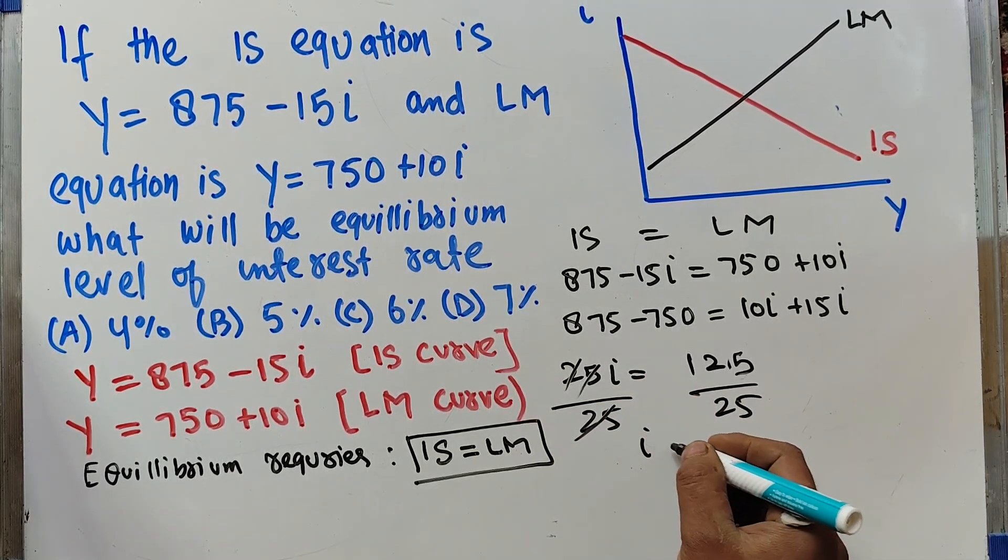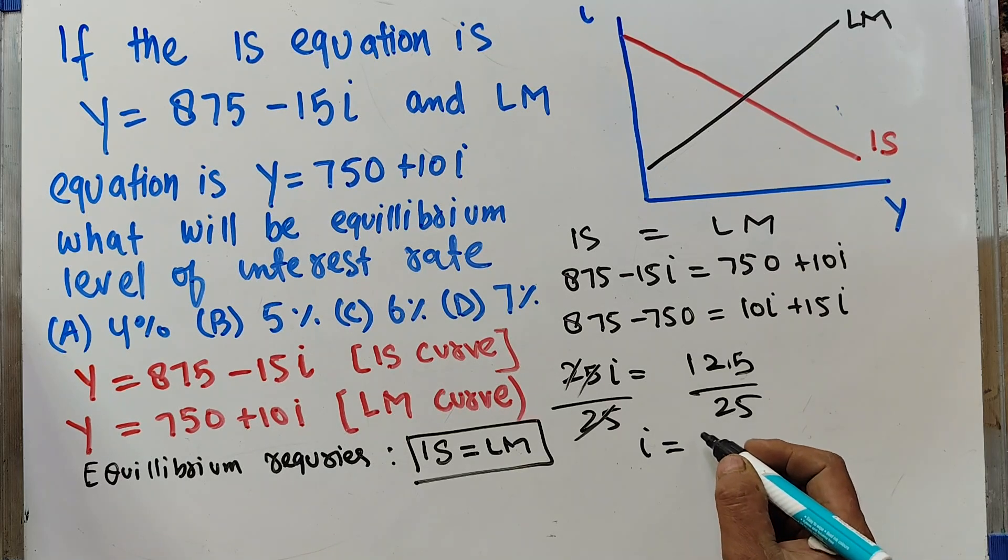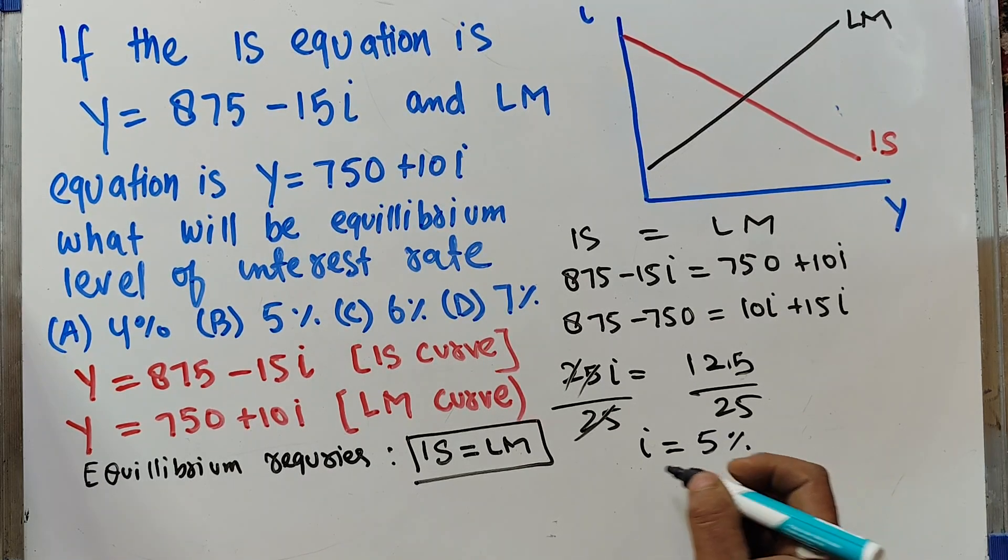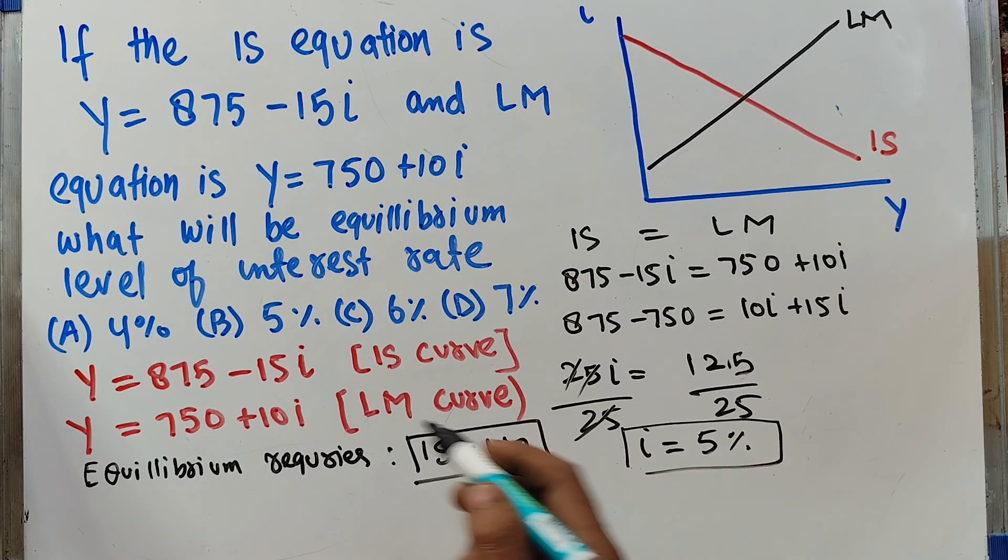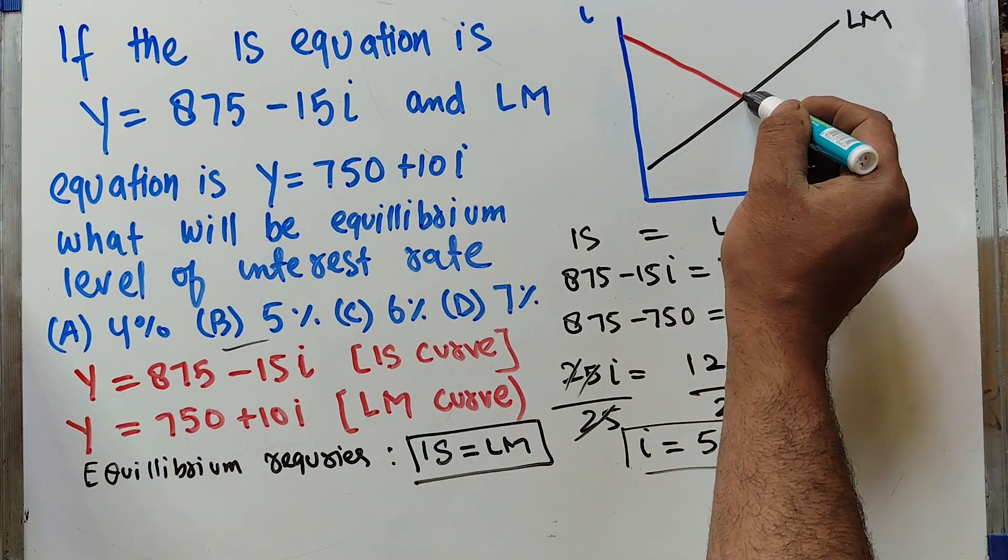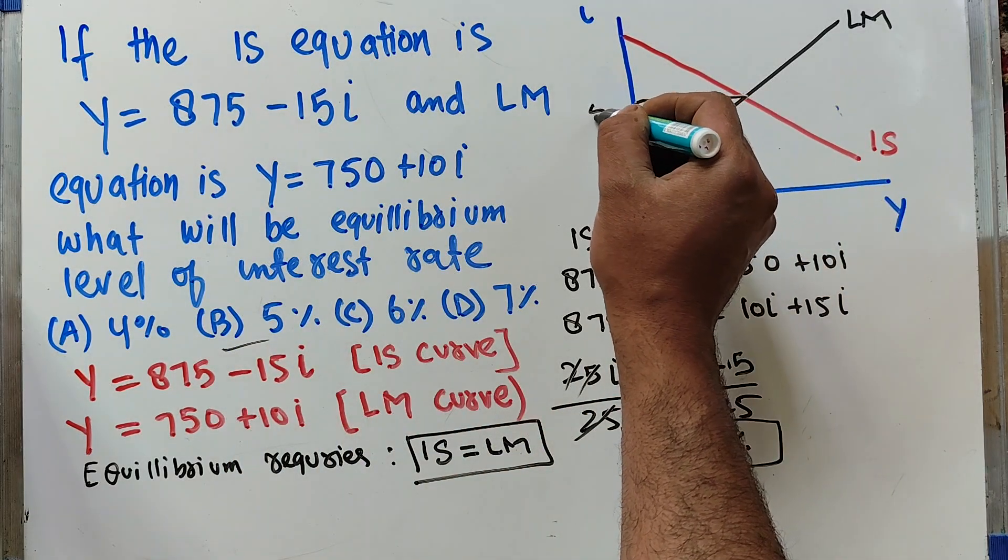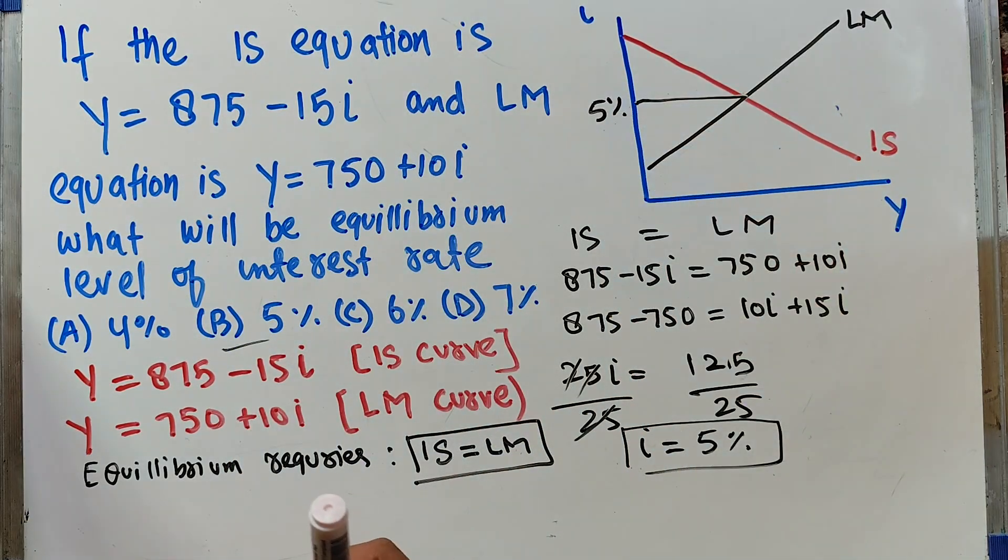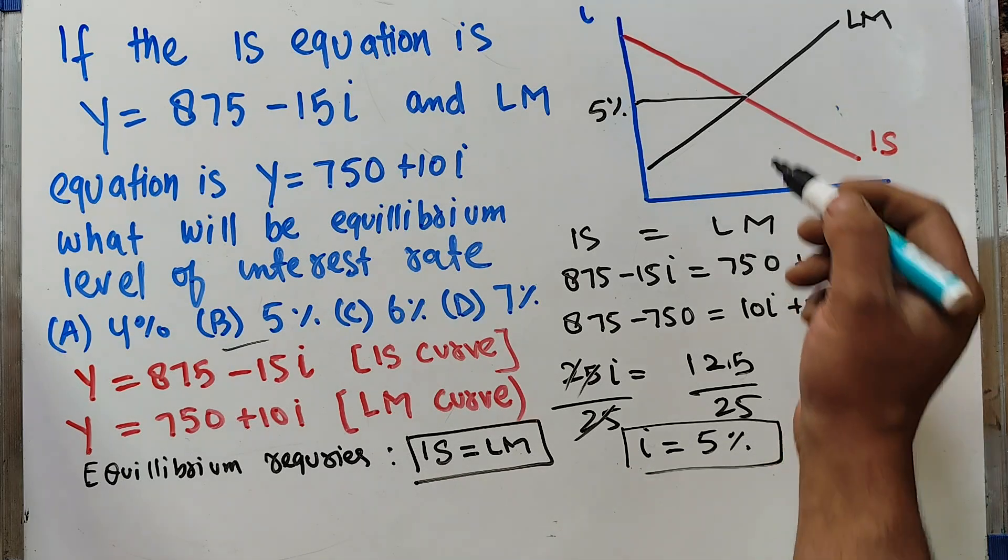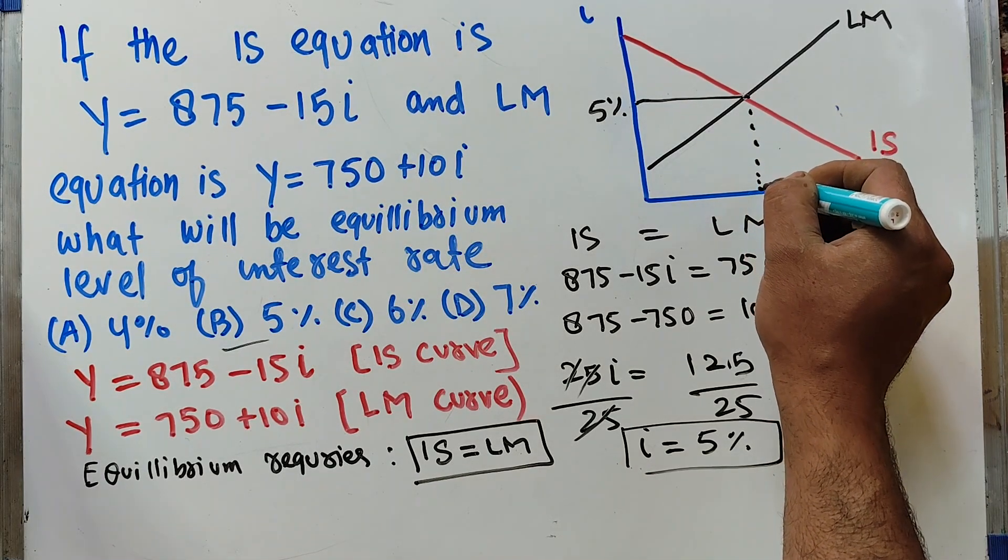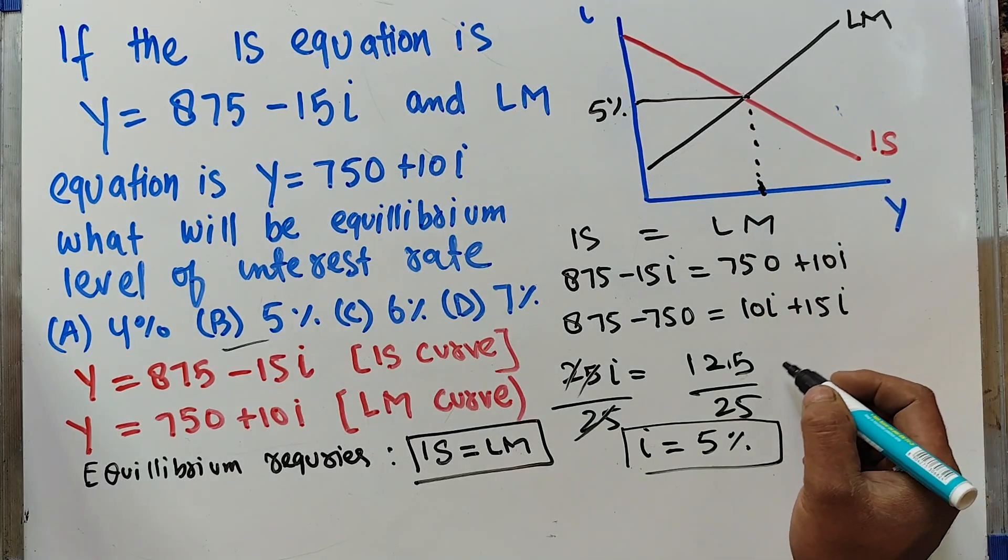The correct option is B. At this point where the interest rate is 5%, we have equilibrium in both IS and LM. We can find the equilibrium level of GDP or output by plugging I = 5 into either equation.